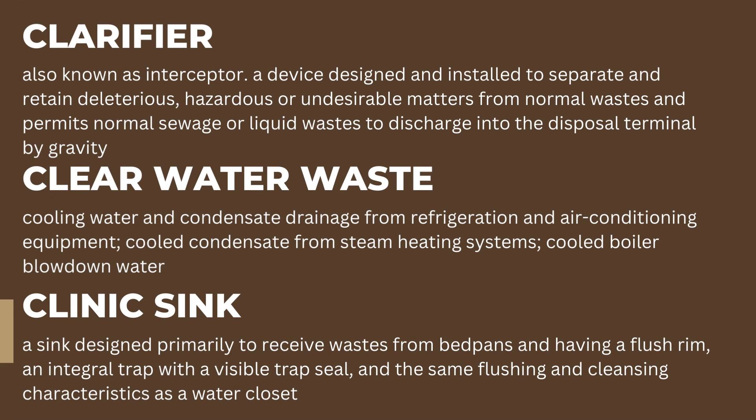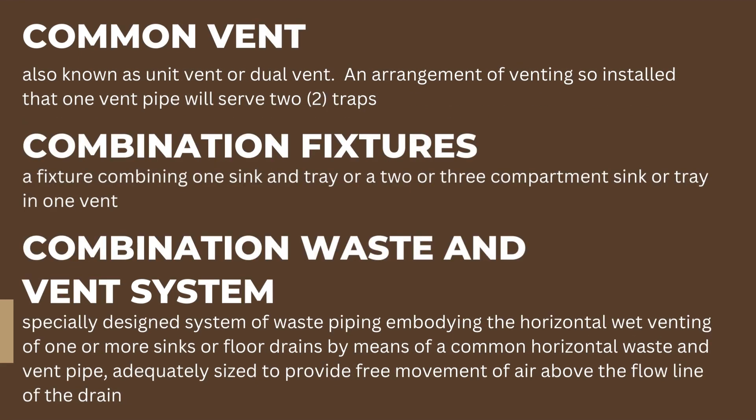Common vent, also known as unit vent or dual vent: an arrangement of venting so installed that one vent pipe will serve two traps. Combination fixtures: a fixture combining one sink and tray, or a two or three compartment sink or tray in one unit.